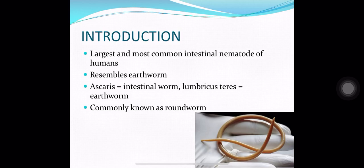Ascaris Lumbricoids is the largest and most common intestinal nematode of human beings. It resembles the Earth Worm. Ascaris means intestinal worm and Lumbricostereus means Earth Worm. So it is an intestinal worm which resembles an Earth Worm, commonly known as Round Worm.